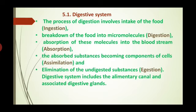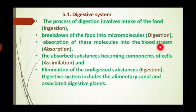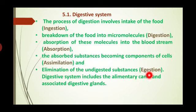The digestive system involves many processes in our digestive tract from the mouth to the anus. The process of digestion involves ingestion — the intake of food — and breakdown of food, which occurs in the mouth, stomach and small intestine. Absorption of digested molecules into the bloodstream occurs by diffusion, followed by assimilation, where absorbed substances become components of cells.